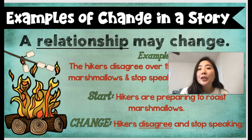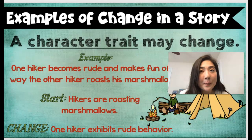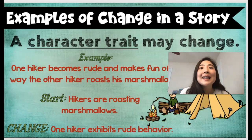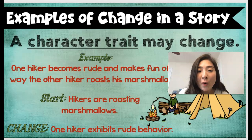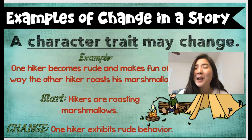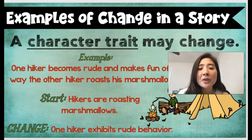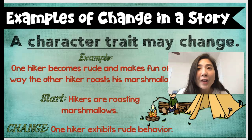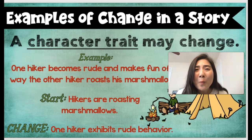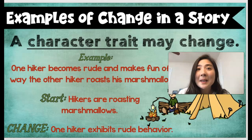As you can see, the relationship between the two hikers changed. The fourth example of a change in a story is that a character trait may change. For example, one hiker becomes rude and makes fun of the way the other hiker roasts his marshmallows. At the beginning, the hikers are roasting marshmallows together and getting along, but then something changed in the way one of the characters acted — one of them started to be rude. That is an example of a character trait changing.